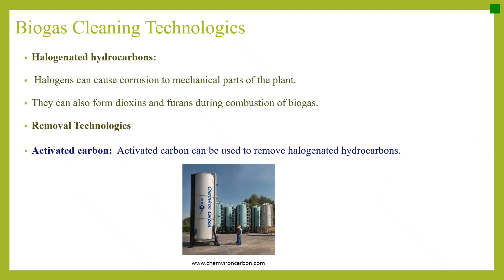Halogenated hydrocarbons. Halogens can cause corrosion to mechanical parts of the plant and can also form dioxins and furans during combustion of biogas. Removal technologies include activated carbon, which can be used to remove halogenated hydrocarbons.